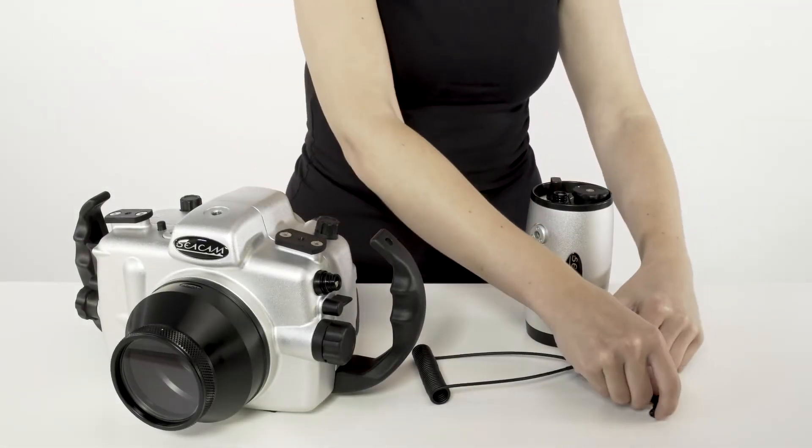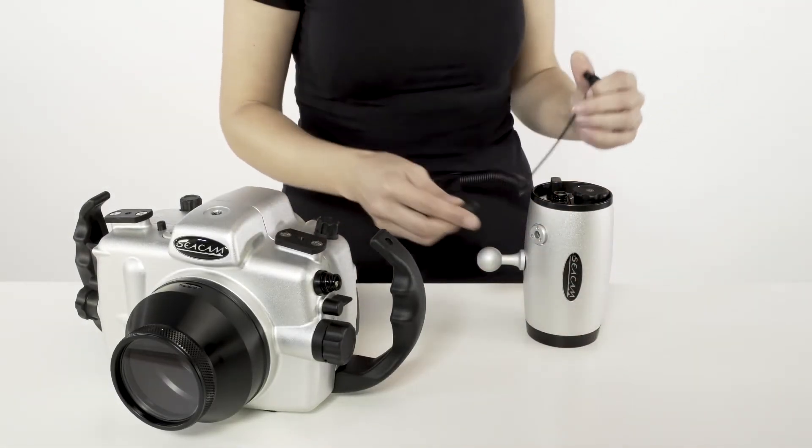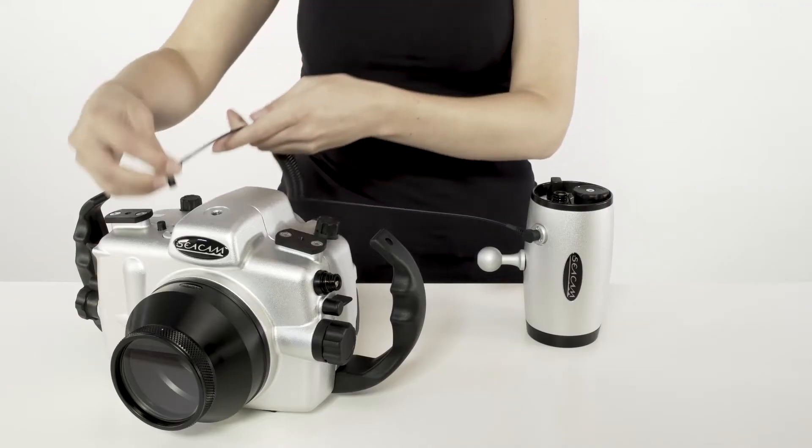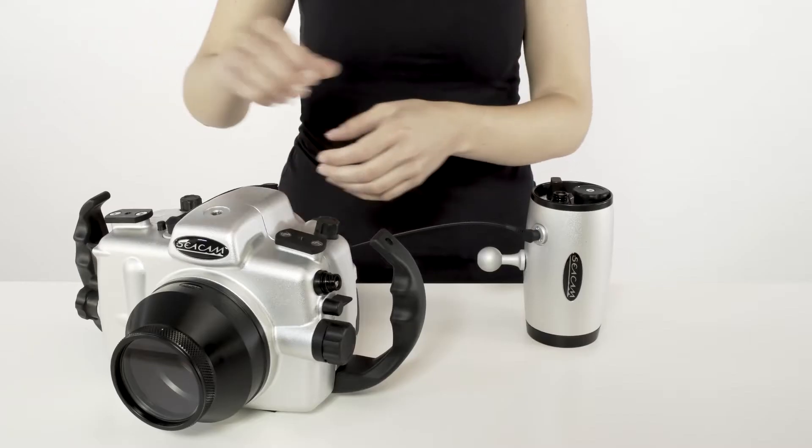To connect a fiber-optical cable, simply plug one end into the fiber-optical socket of the flash and the other one into the socket on the housing.